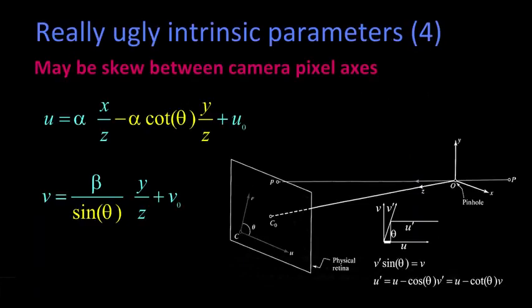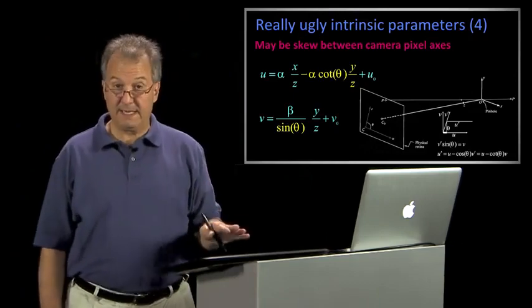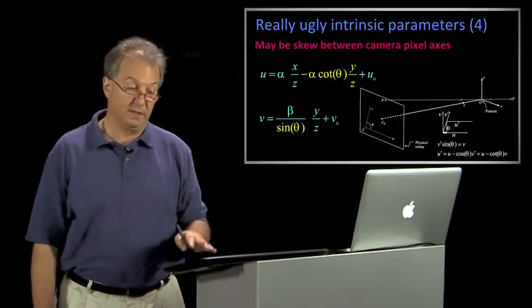And so when you substitute those into those equations we just had, you get this sort of ugliness. So this is the really ugly intrinsic parameter representation. And now we have how many? We've got an alpha and a beta, the two scale factors, that's two degrees of freedom, a U zero and V zero for the two offsets, plus theta, which is the skew. This is pretty ugly, and we'd like to make it nicer, and we're going to do that through two ways.